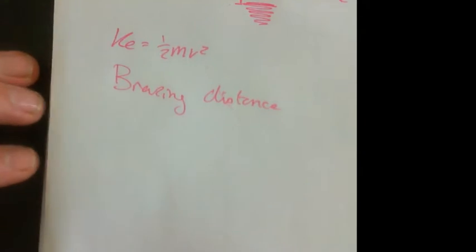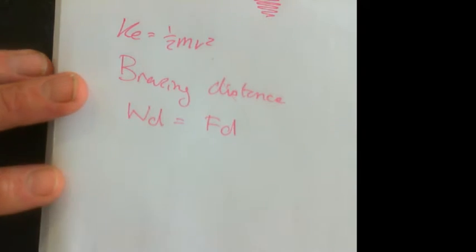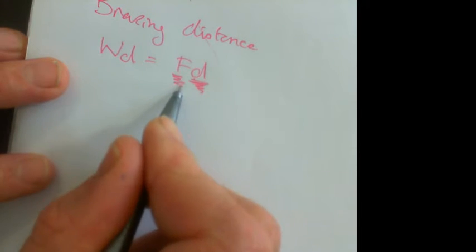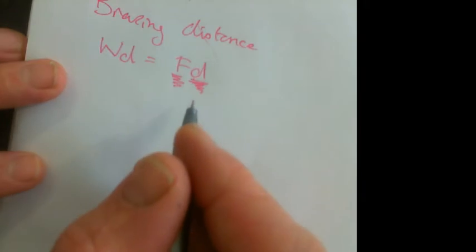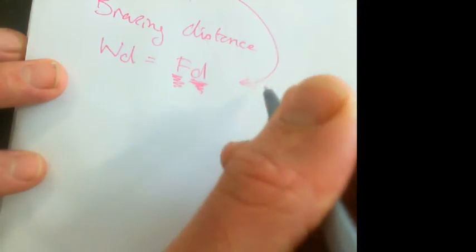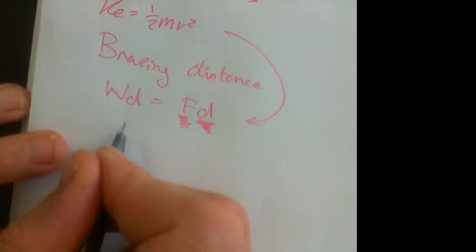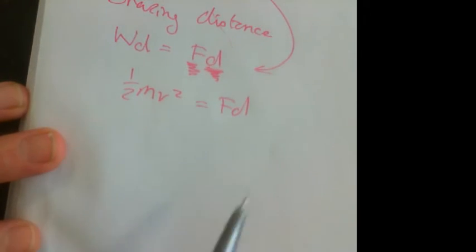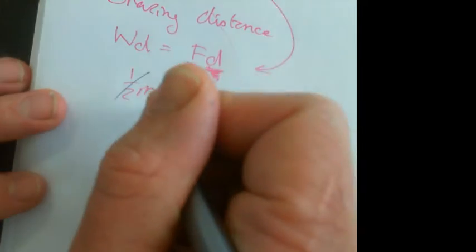We know that work done equals force times distance. This distance here is going to be the braking distance, and this force here is the amount of force applied by the car brakes. If we know that equals the amount of kinetic energy if we're trying to stop it, we say that a half mv squared equals Fd. I can cancel out my constants because they're not changing anything.